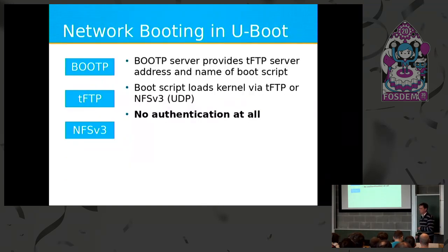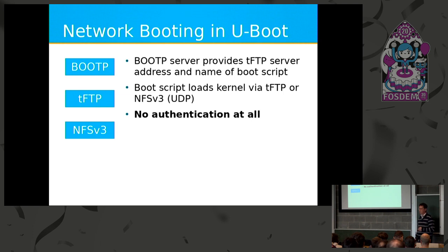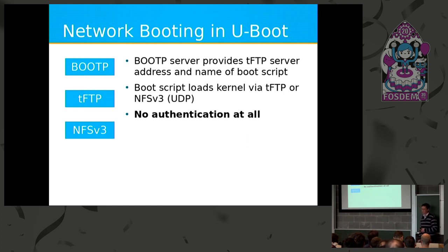Network booting exists in U-Boot. You can set up a BOOTP or DHCP server that provides the address of a script, the script can be downloaded via TFTP, and then you can boot from an NFS server. But unfortunately, as U-Boot only supports UDP, the server has to be set up running UDP. There's no authentication at all — and that's not what I wanted.